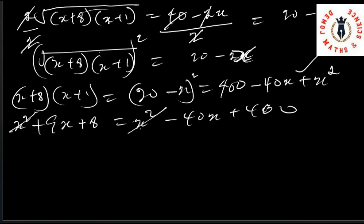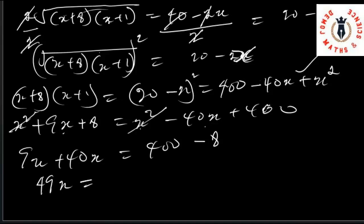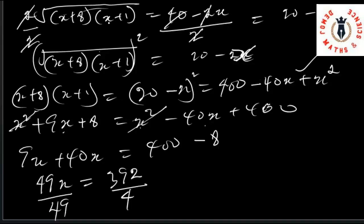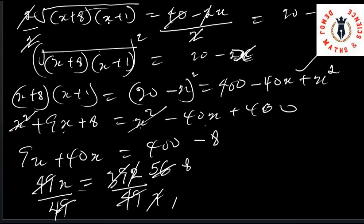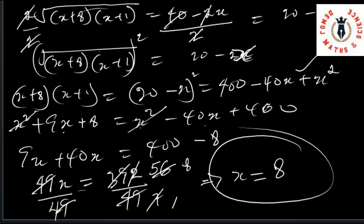So we have x squared plus 9x plus 8 equals x squared minus 40x plus 400. The x squared terms cancel. Collecting like terms: 9x plus 40x is 49x, and 400 minus 8 is 392. Dividing both sides by 49: x equals 392 divided by 49, which equals 8. Conclusively, x equals 8. I hope with this lesson you understand how to solve radical equations with two squares. Thank you and have a nice time.